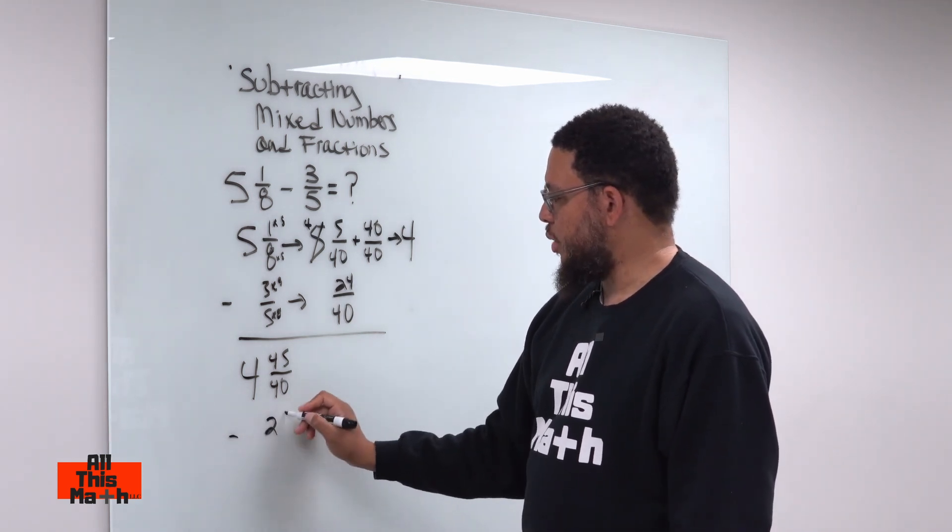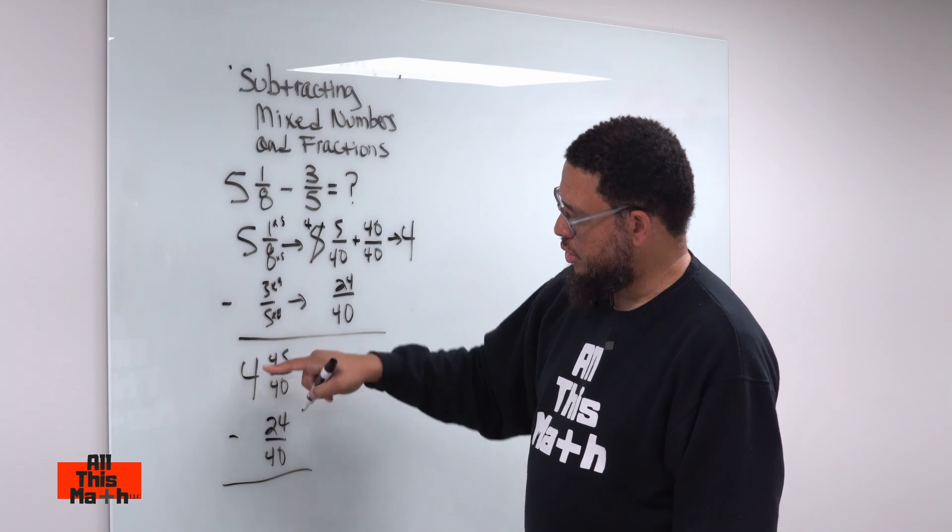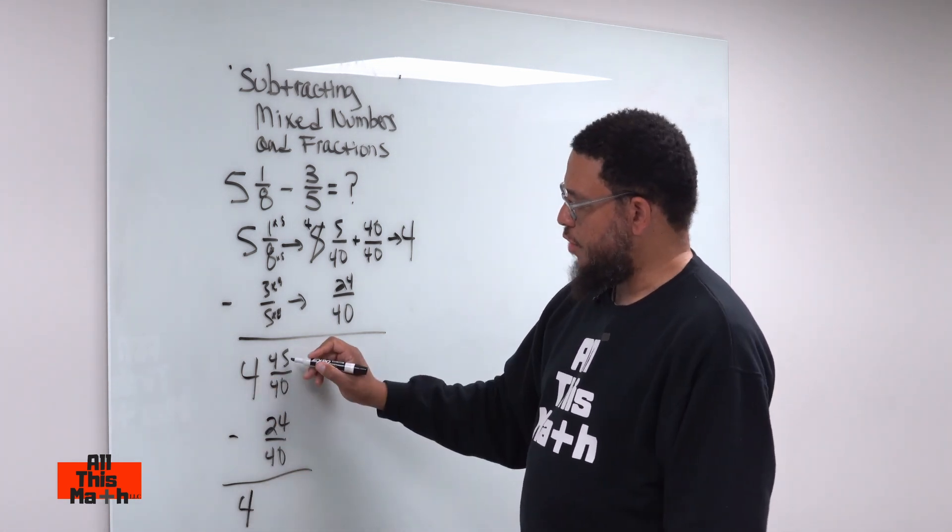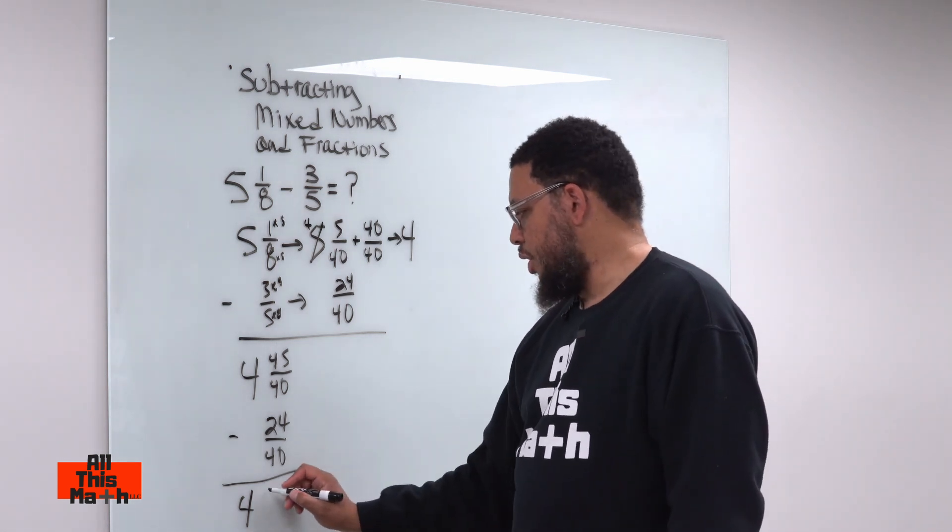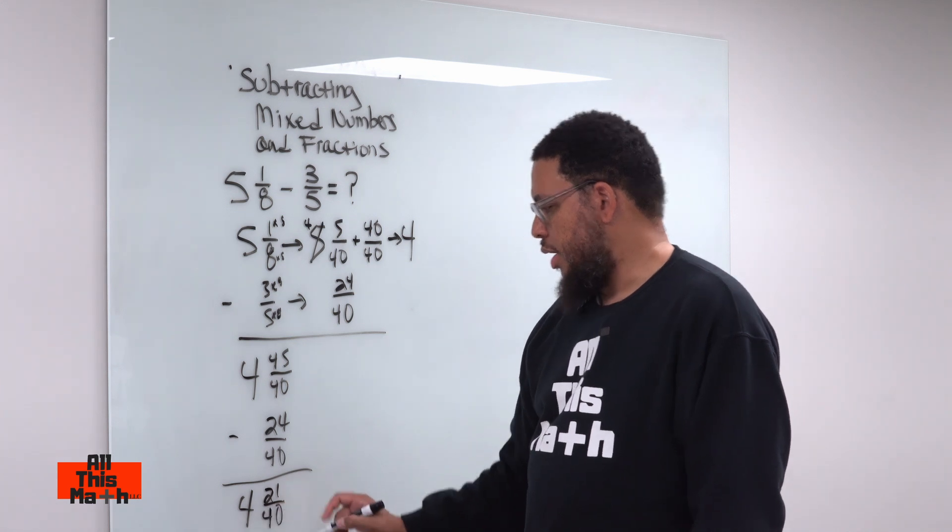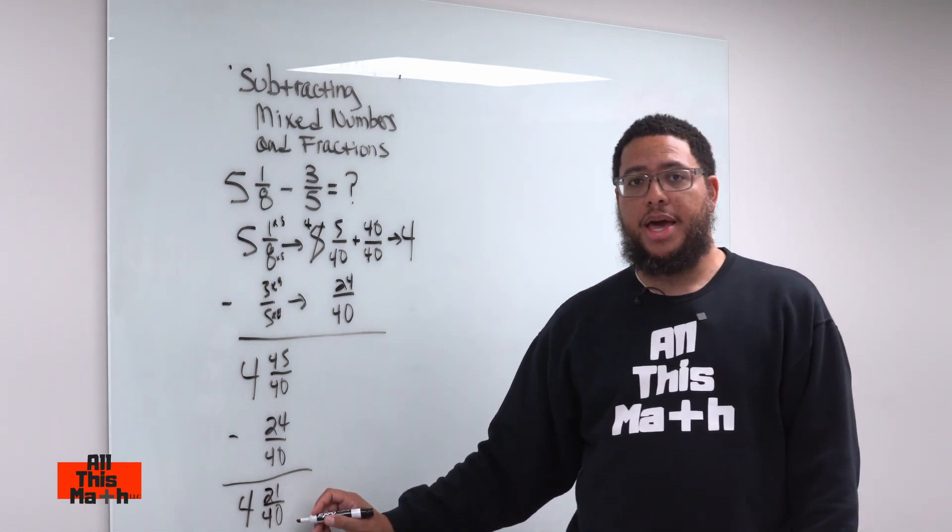And then I'm subtracting 24 fortieths, and we subtract our whole numbers, four up top minus zero. So, that's four. And then 45 fortieths minus 24 fortieths, what does that give us? That gives us 21 fortieths. 45 take away 24 is 21.